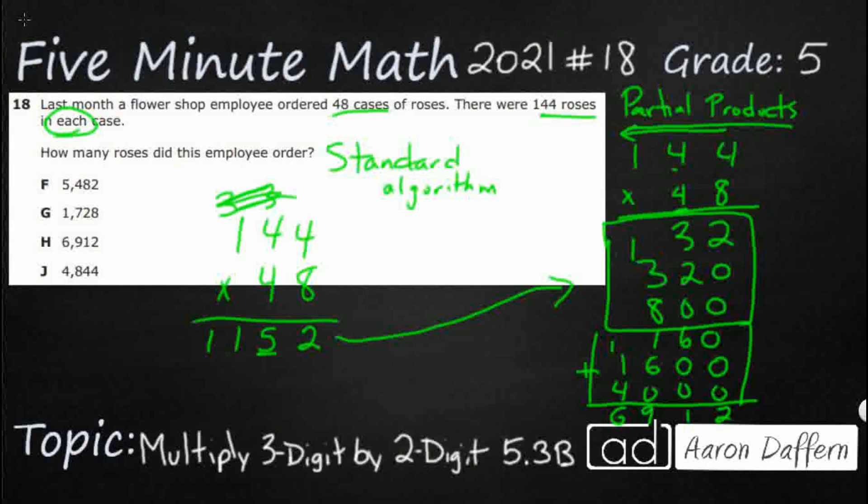Now we're going to put a 0 here because remember this 4 is really 40, so it's in the tens place. So 4 times 4 is 16. So we're going to carry that right there in the tens place. 4 times 4 is 16. Again, add this one back in. That's going to be 17.